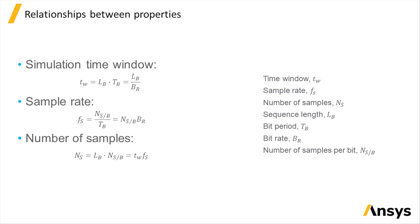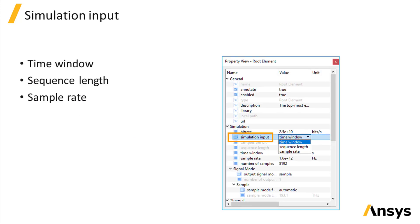Given these relationships, the signal sampling can be fully described using only a subset of the properties. The simulation input property of the root element can be used to switch between which subset of properties are active.